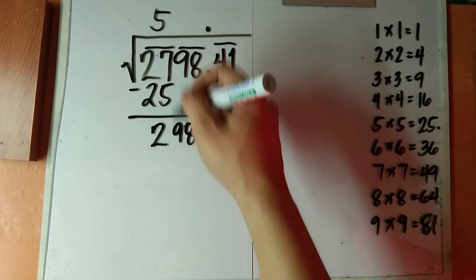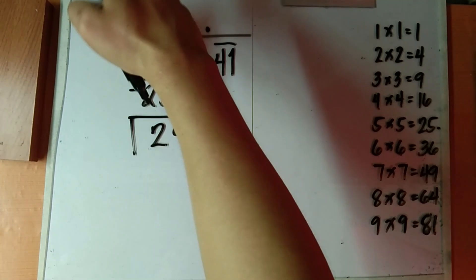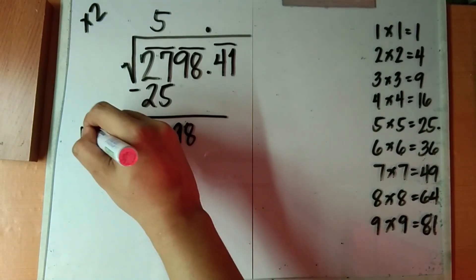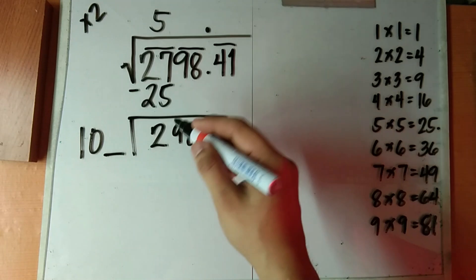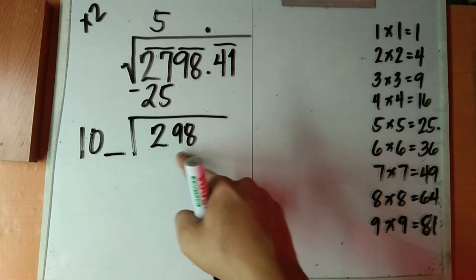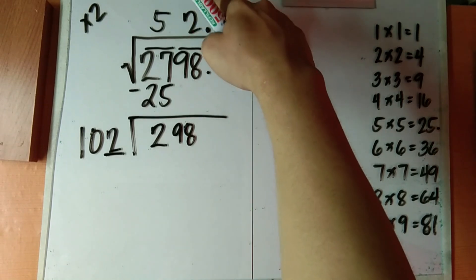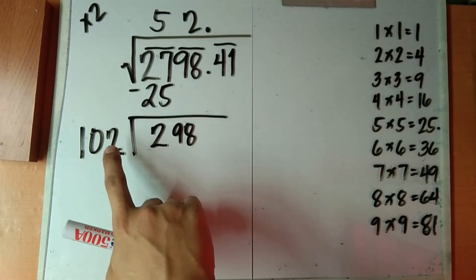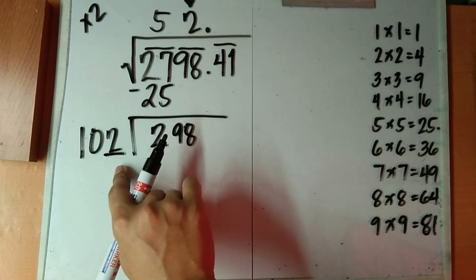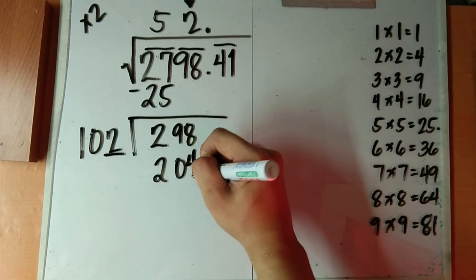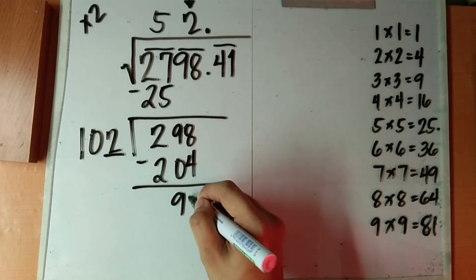Then we have 298. Next, we multiply the number above the radical sign, which is 5, by 2. This is always multiplied by 2. 10. Leave a blank for the unit's digit. Now how many 100 plus are there in 298? So by estimation, it's 2. The unit's digit here should be the same as the unit's digit here in this divisor. So multiply 2 by 102. So this would give you 204. Now subtract 298 by 204. The difference here is 94.